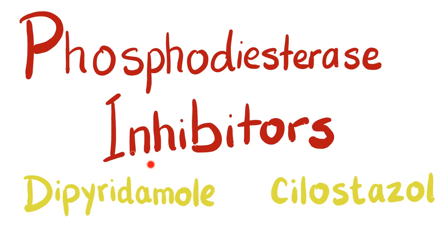Hey guys, it's Medicosis Perfectionelis, continuing our discussion about bleeding and coagulation disorders. In previous videos, we have talked about cyclooxygenase inhibitors, P2Y12 inhibitors, and GP2B3A inhibitors. Today we'll talk about phosphodiesterase inhibitors. Now let's get started and prevent platelet aggregation and blood coagulation.